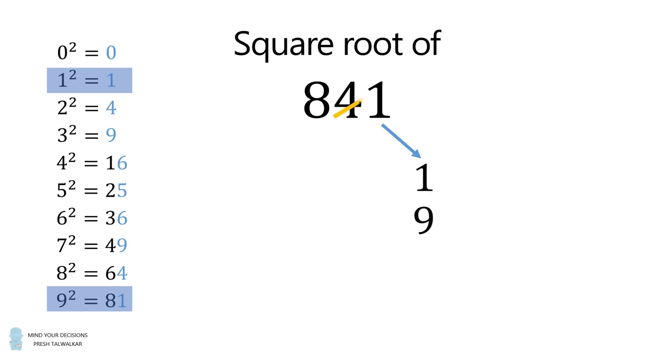We'll continue by crossing out the last two digits. Now, we want the square that's closest to 8 without going over. So, this will be 2 squared, which is equal to 4. So, we write a 2 here. Now, we need to go to two options. We either have 841 is equal to 21 squared or 29 squared. To distinguish between the two, we'll use a genius method.